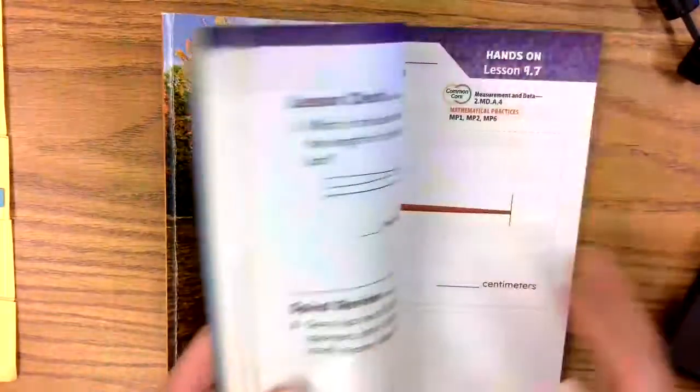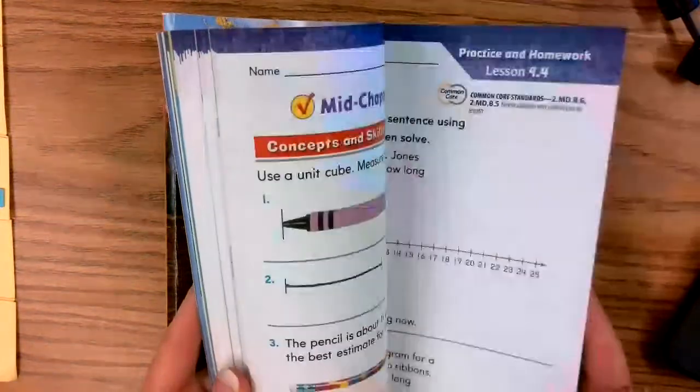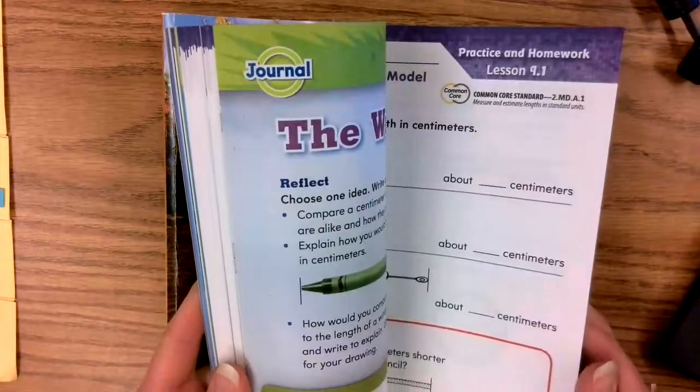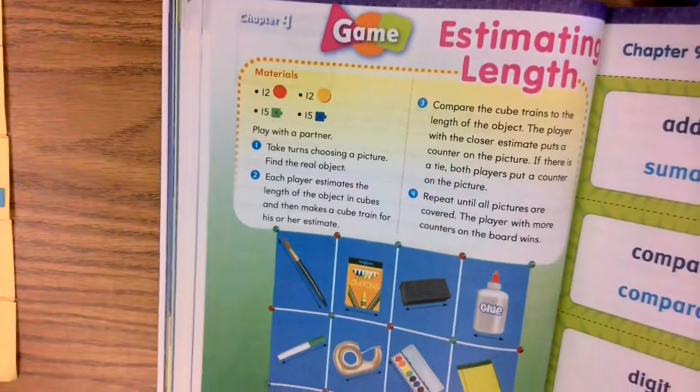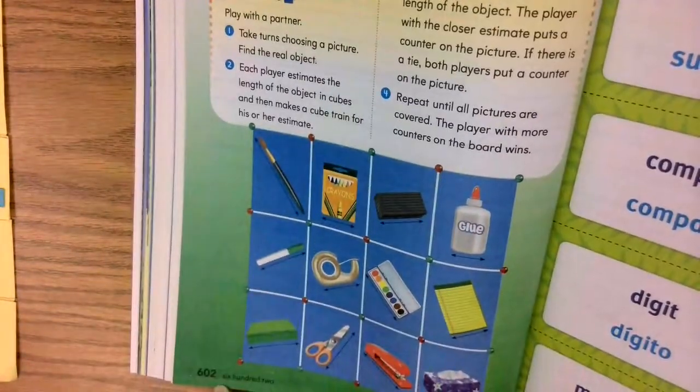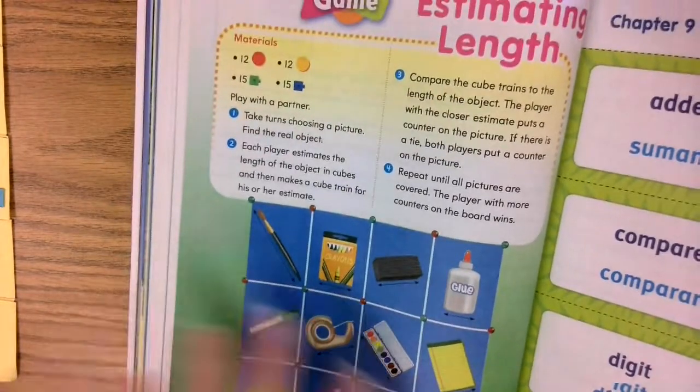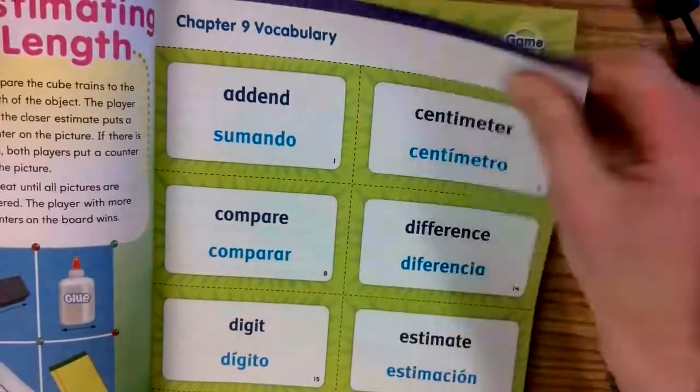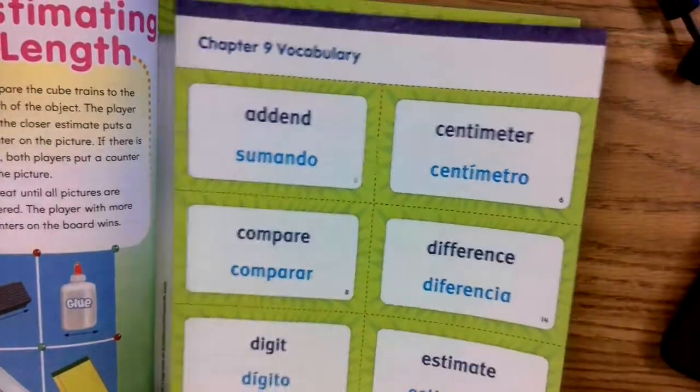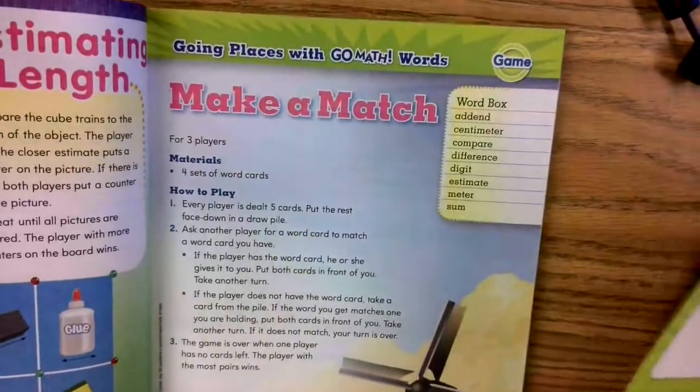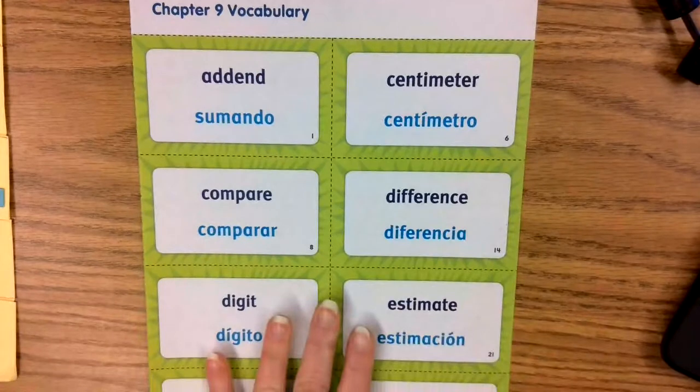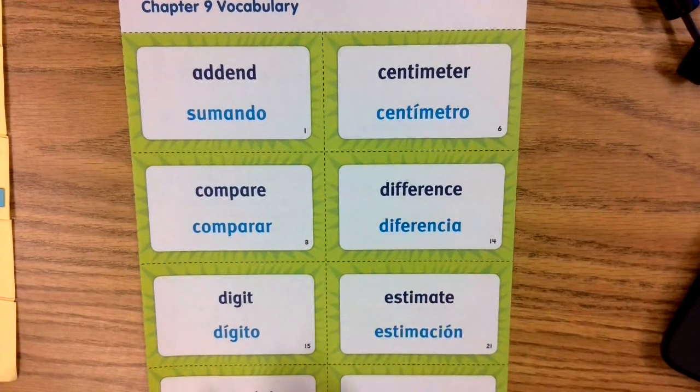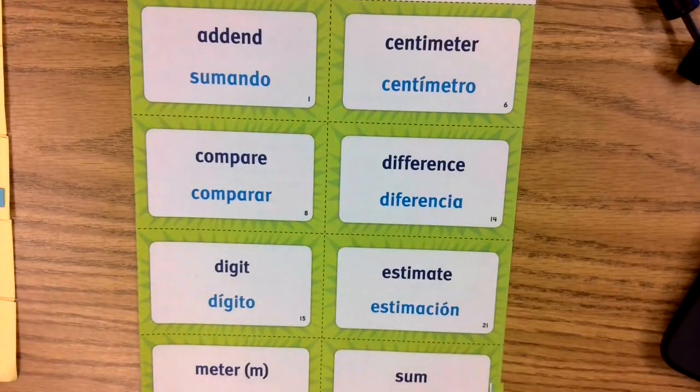Okay, first thing you need to do is turn to the beginning of chapter 9. At page 602 there's this game and then right next to it are the vocabulary cards for chapter 9. Oh, you need scissors too, I forgot that part. So take out your vocabulary cards and I need to get my scissors.